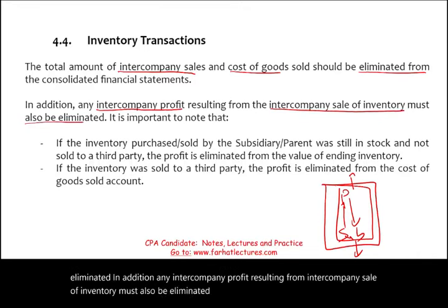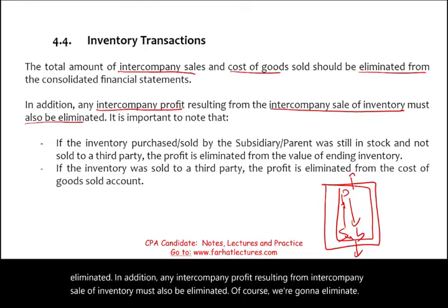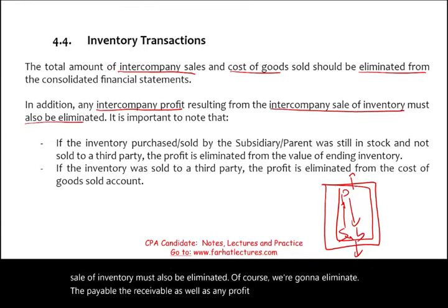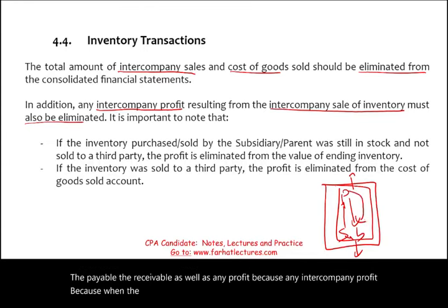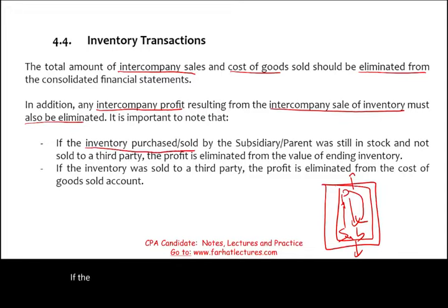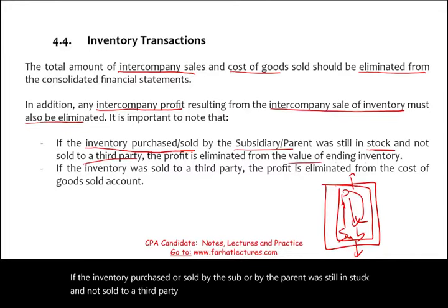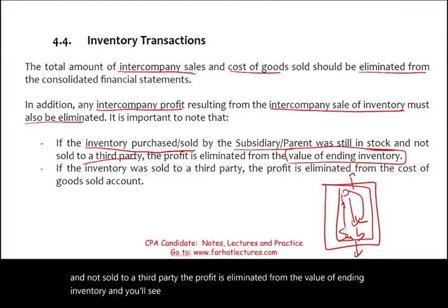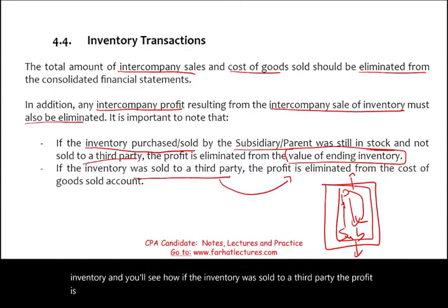We're going to eliminate the payable, the receivable, as well as any intercompany profit, because when the parent sells to the sub or the sub sells to the parent, they may sell at a profit. If the inventory purchased or sold was still in stock and not sold to a third party, the profit is eliminated from the value of ending inventory. If the inventory was sold to a third party, the profit is eliminated from cost of goods sold. The example we'll work through illustrates both points.